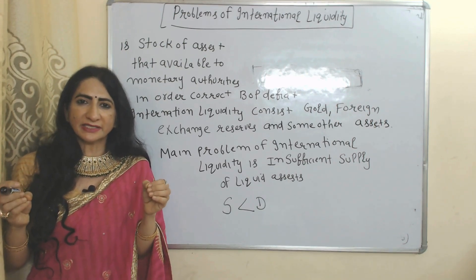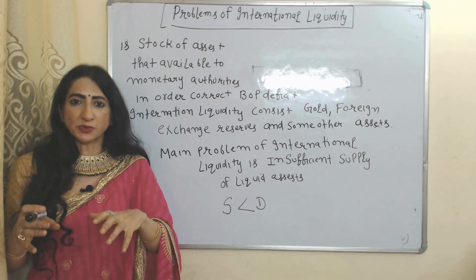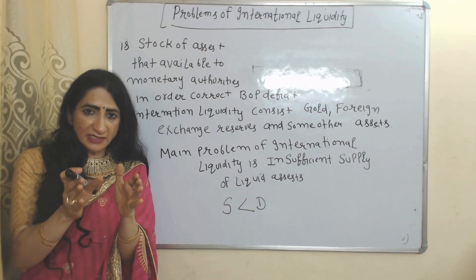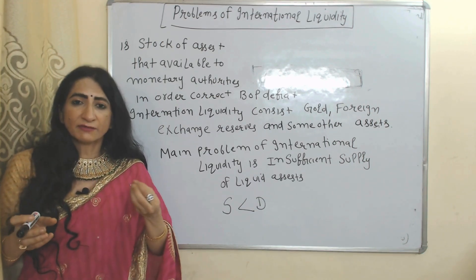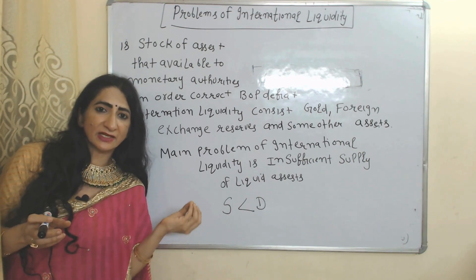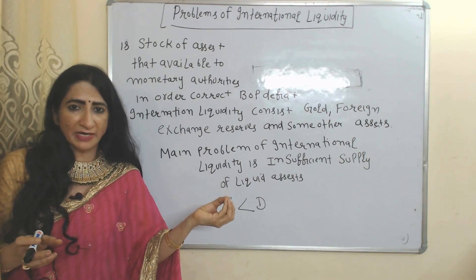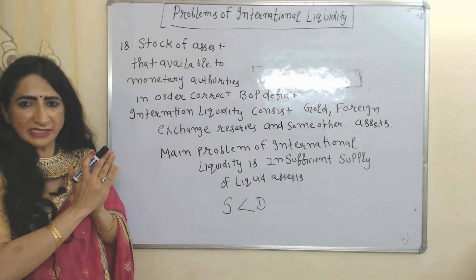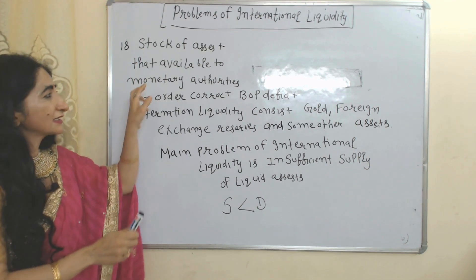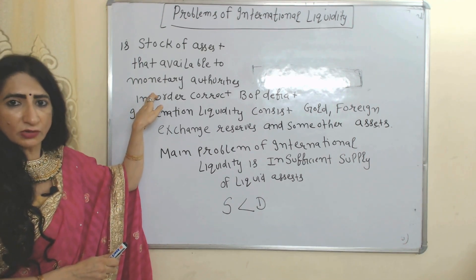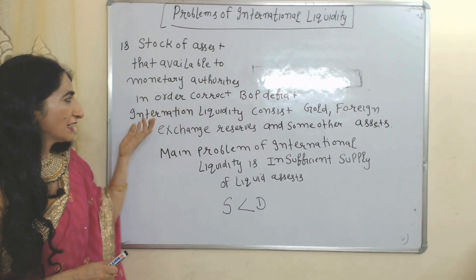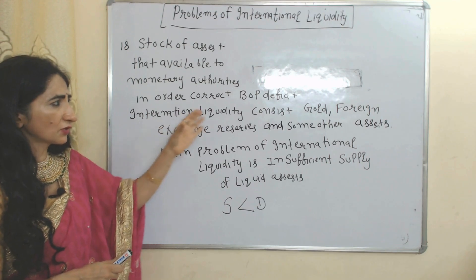Now we talk about problems of international liquidity. What is international liquidity? Sometimes our balance of payment goes into deficit. There is a stock of assets available to monetary authorities so that they can correct their deficit in balance of payment — this is called international liquidity. International liquidity is the stock of assets available to monetary authorities to correct balance of payment deficits. It consists of gold, foreign exchange reserves, and some other assets.